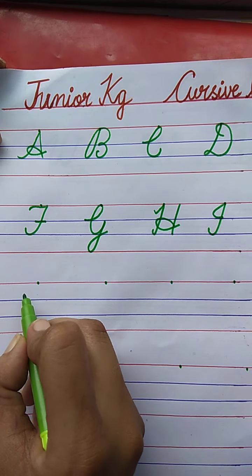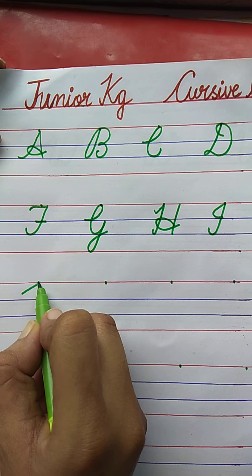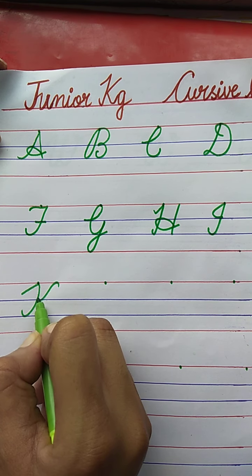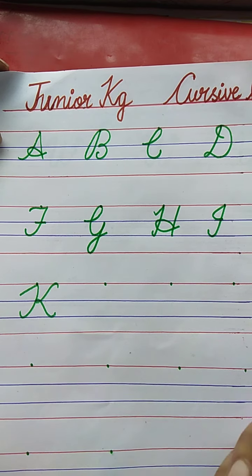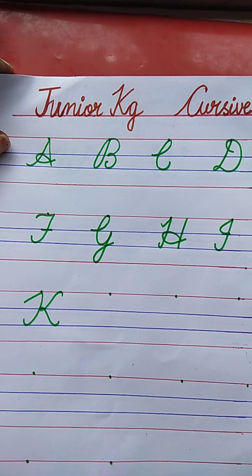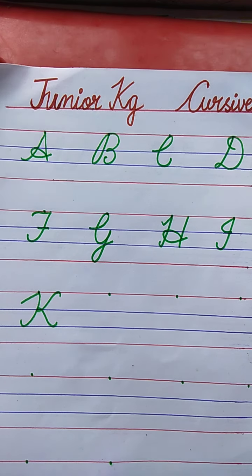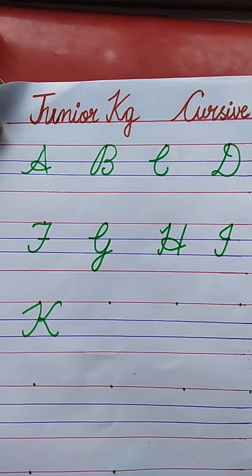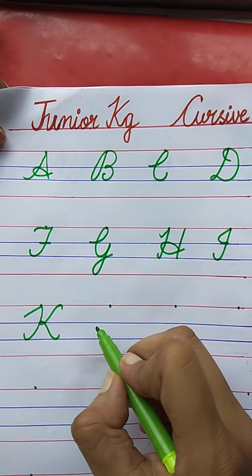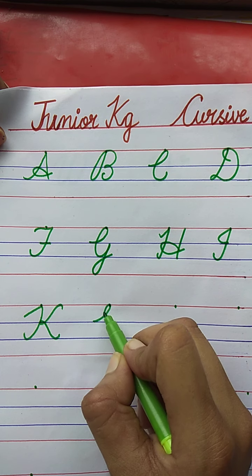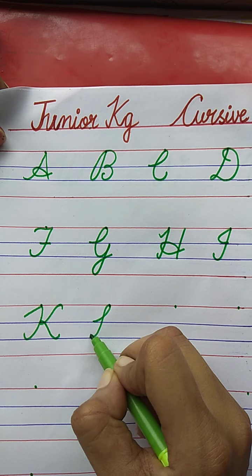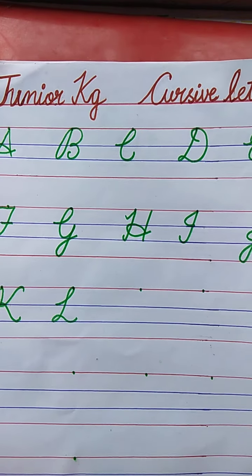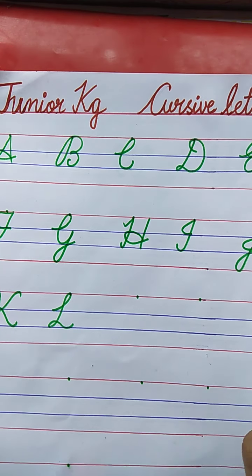K. K for Kite. The spelling of Kite: K-I-T-E. Now tell me the next letter. L. Very good. L for Lion. The spelling of Lion: L-I-O-N.